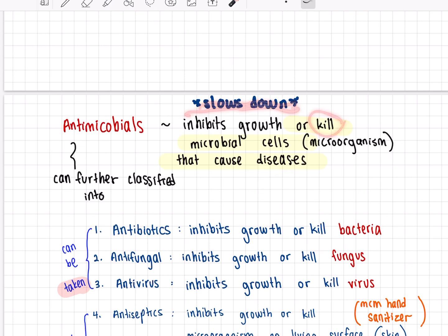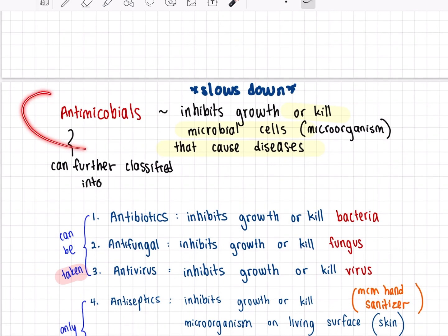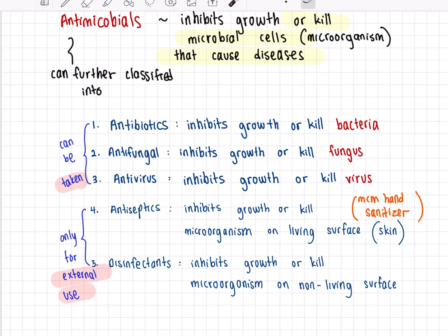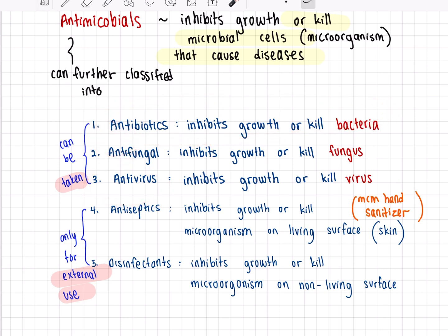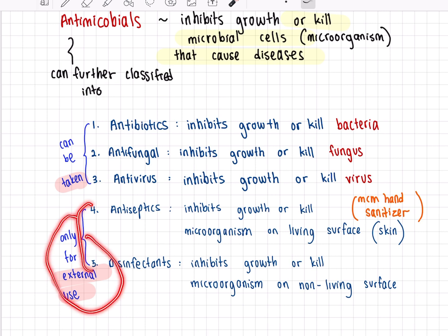Antimicrobials inhibit or kill microbial cells that cause diseases. Antimicrobials can be split into five categories: antibiotics, antifungal, antiviral, antiseptics, and disinfectants. The first three can be taken internally, whereas antiseptics and disinfectants are only for external use.